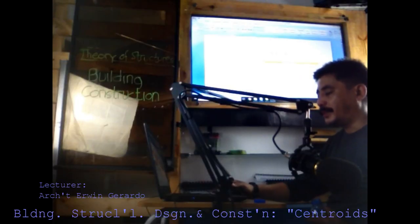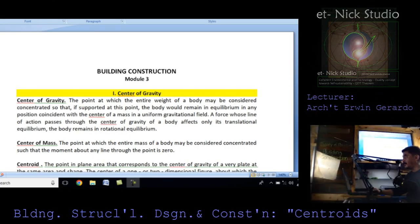Good day. I'm going to tackle another part of building construction under theory of structures. Center of gravity is the point at which the entire weight of a body may be considered concentrated, so that if supported at this point, the body would remain in equilibrium in any position, coincident with the center of mass in a uniform gravitational field. A force whose line of action passes through the center of gravity of a body affects only its translational equilibrium.